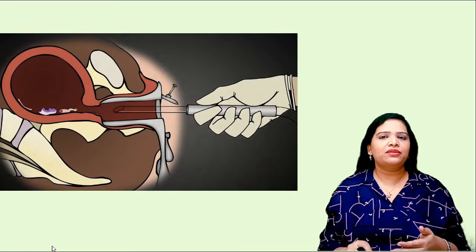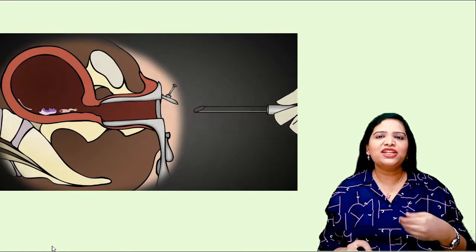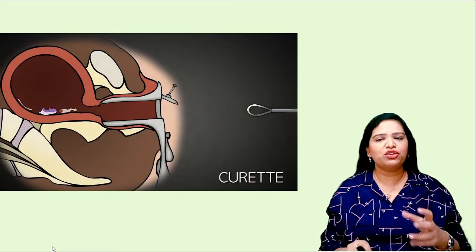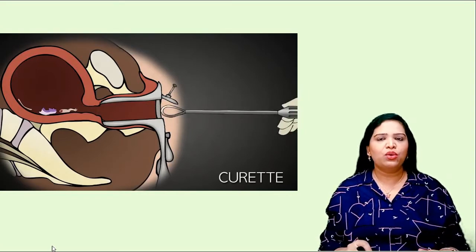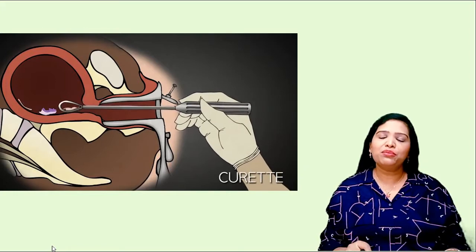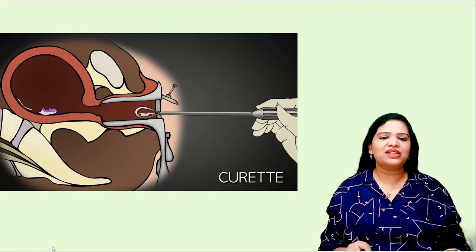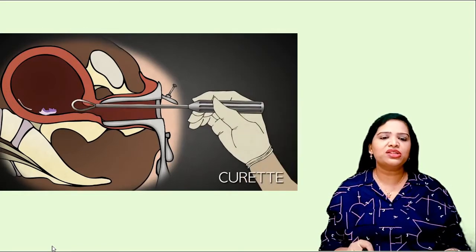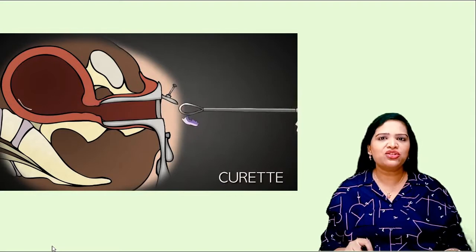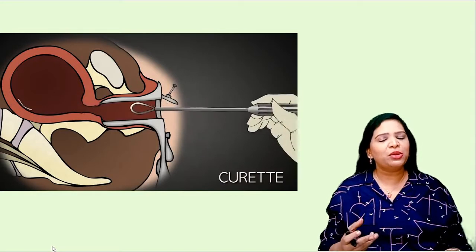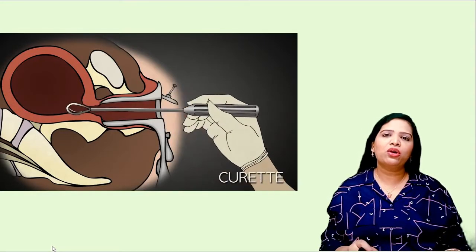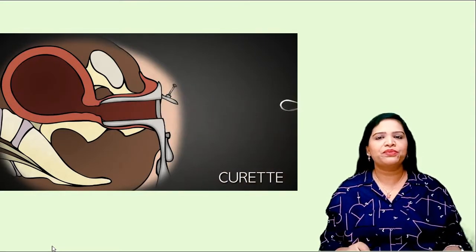Later, if any tissues are remaining, they will scoop the rest of the tissues from the uterus. This will lead to many risk factors — there will be injury to the uterus in the cervix, there will be hemorrhage in the mother, it may lead to infection, and sometimes it may cause the death of the mother.